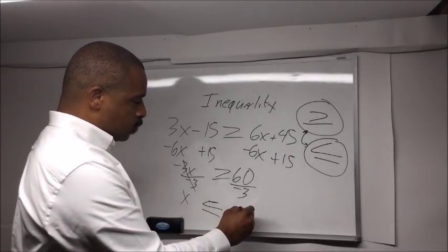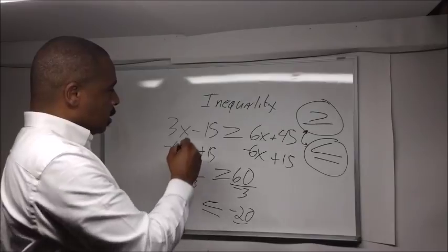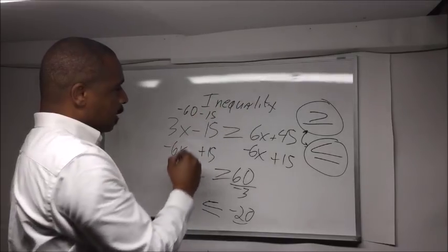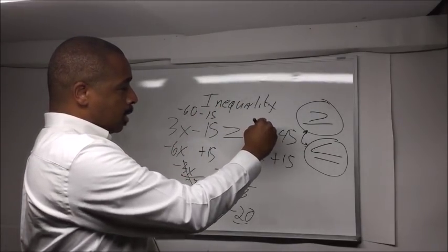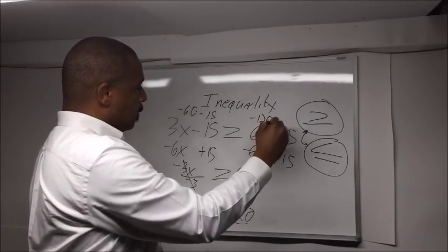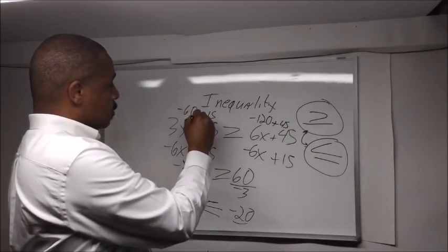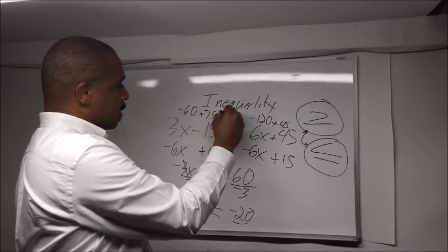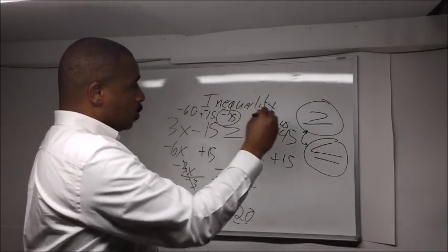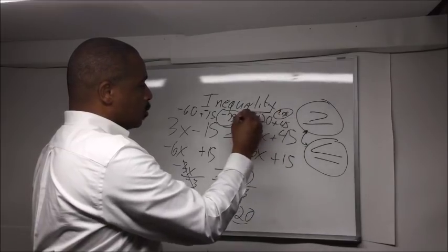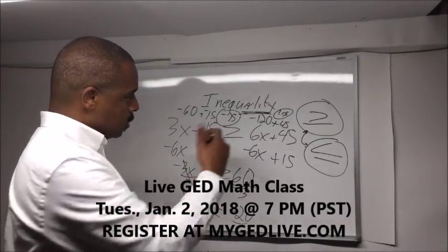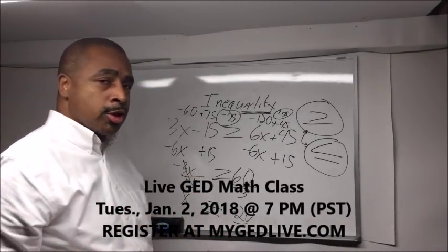Now we can check this out. We can go ahead and put in this negative 20 value in for x. So negative 20 times 3 would give us negative 60 minus 15, and then we put in negative 20 here. Negative 20 times 6 is negative 120 plus 45. This would give us negative 75, and then negative 120 plus 45 would give us negative 75 over here. We will see that is greater than or equal to, so it's either greater than or equal to, and you see that is true.